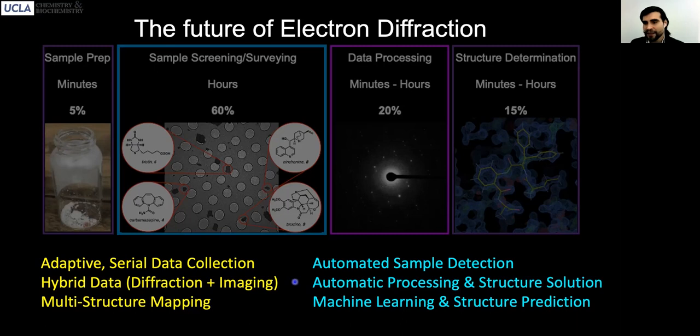Automated processing and structure solutions can allow this to happen in the background so that it doesn't require human input or intervention. Students, for example, sitting at the microscope, instead, training in how to do this automatically can substantially enrich the training of young graduate students who are interested in the next generation of electron microscopy tools.